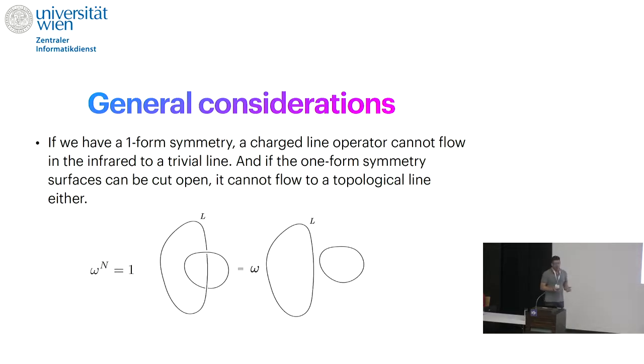To decide whether a given line operator flows to a trivial line operator, a conformal line operator, or some other option, we have to see what are the available tools in QFT. I'll mention three general approaches or constraints. First, higher symmetries: if you have a line operator that is charged under a one-form symmetry, roughly speaking, it cannot flow to a trivial line operator. To prove this, one has to make another small assumption that the one-form symmetry surfaces cannot be cut open. One-form symmetry places a constraint on the infrared phases of line operators for sure.